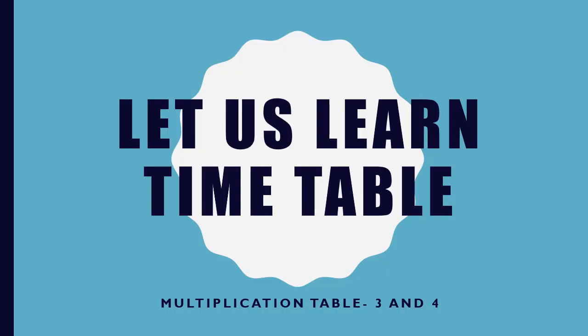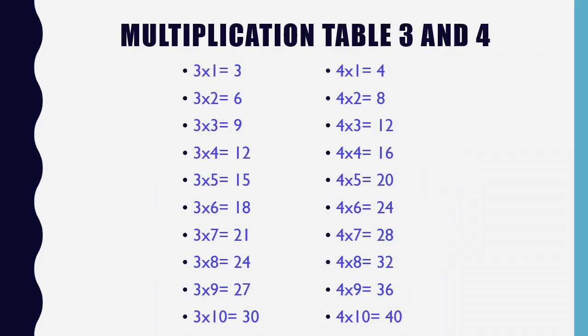Let us now learn multiplication table 3 and 4. Multiplication table 3: 3 × 1 = 3, 3 × 2 = 6, 3 × 3 = 9, 3 × 4 = 12, 3 × 5 = 15, 3 × 6 = 18, 3 × 7 = 21, 3 × 8 = 24, 3 × 9 = 27, 3 × 10 = 30.